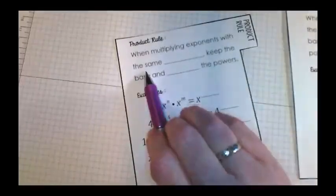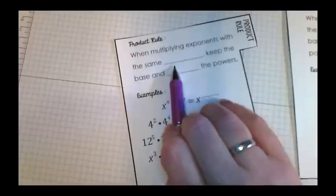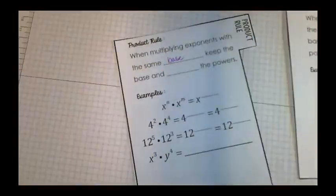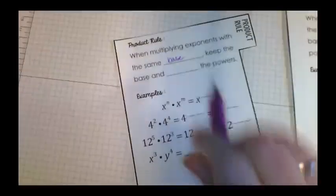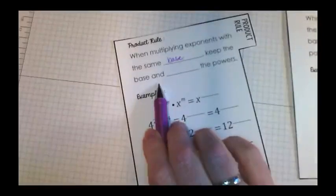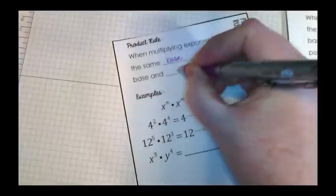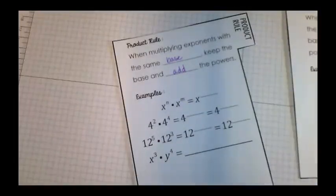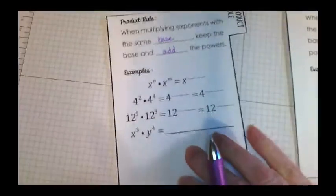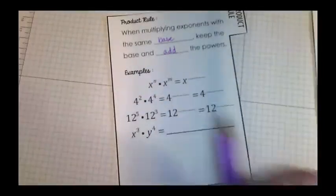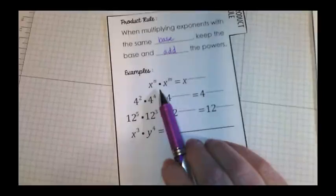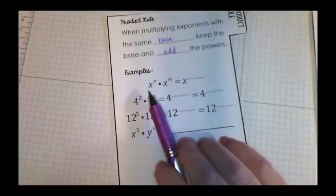When multiplying exponents with the same base, I'm guessing most of you got that. Keep the base and what do we do with the product rule? We add the powers. So to make this confusing, because it's algebra, we start off with an algebraic example where the entire example is in variables and no numbers, but we can make this work.